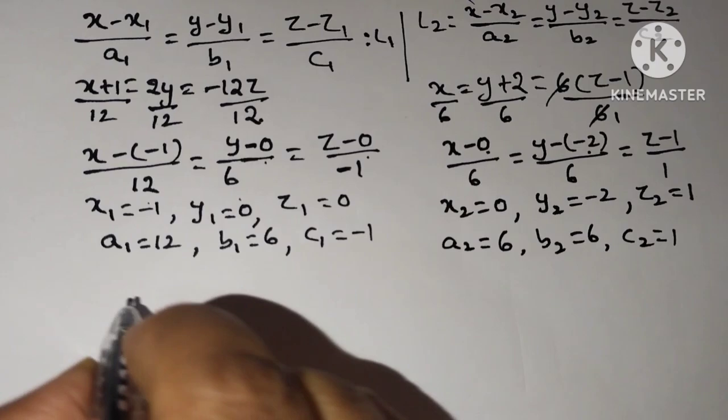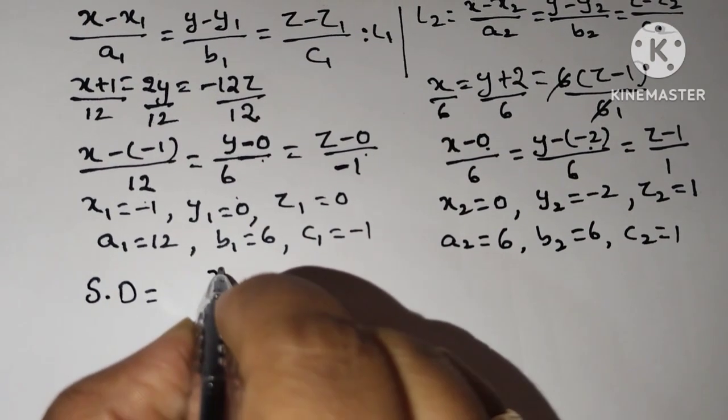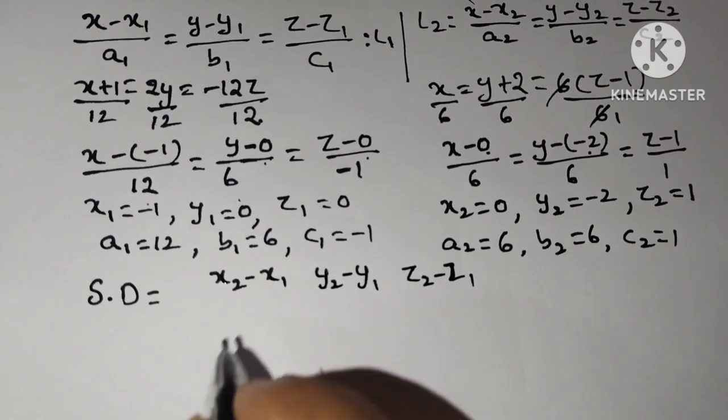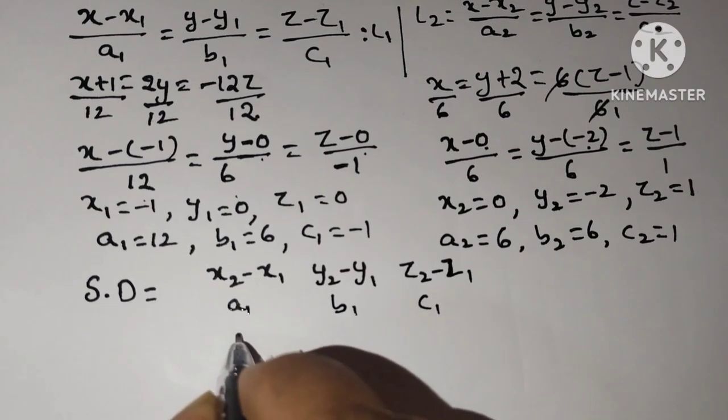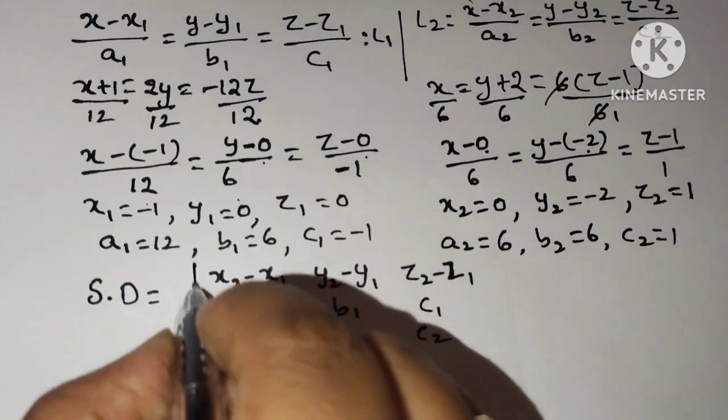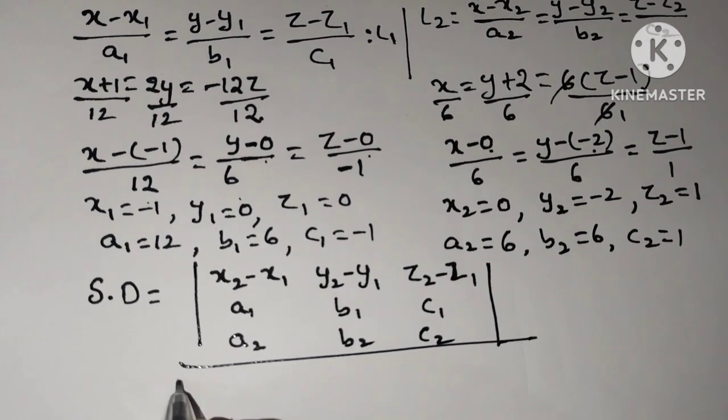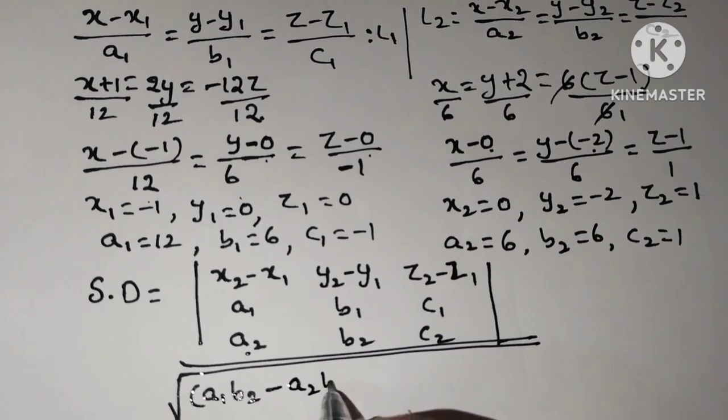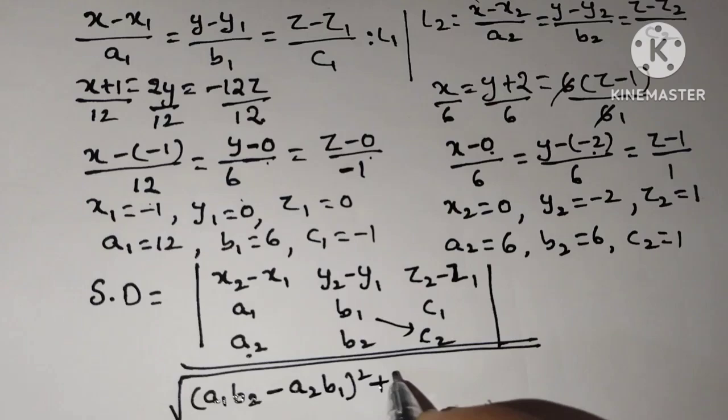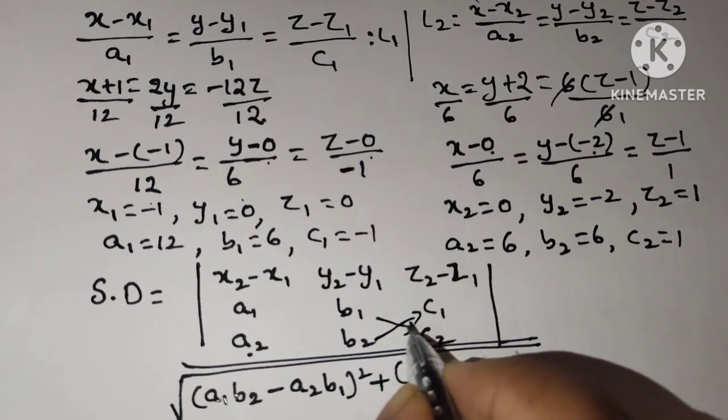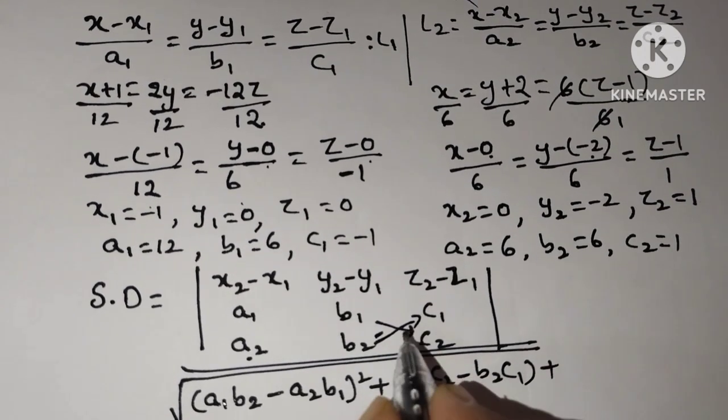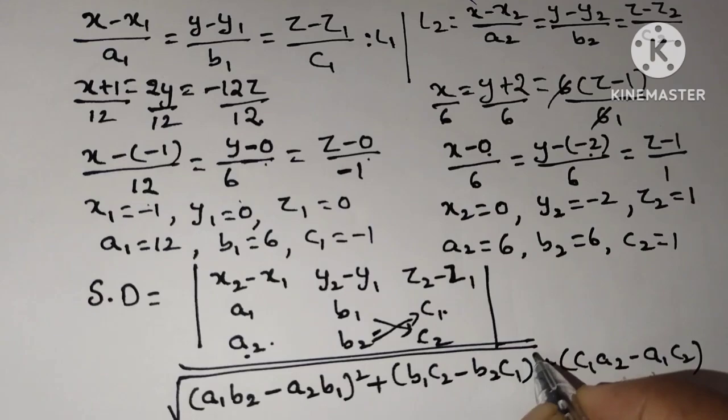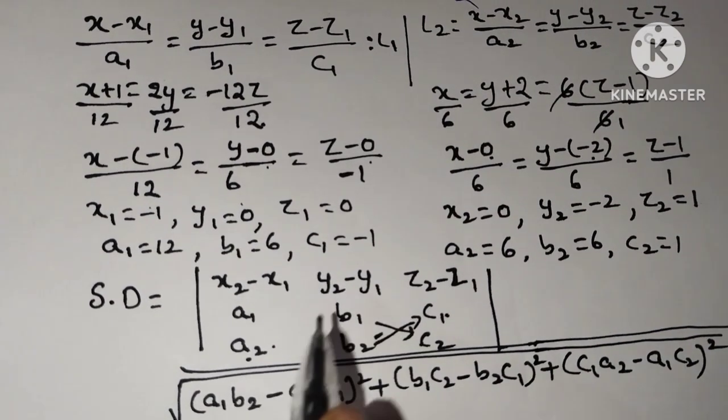Now let us find shortest distance. Write shortest distance formula. What is that? x2 minus x1, y2 minus y1, z2 minus z1. Second row: a1, b1, c1. Third row: a2, b2, c2. Modulus. By square root of a1 b2 minus a2 b1 whole square plus b1 c2 minus b2 c1 whole square plus c1 a2 minus a1 c2 whole square.